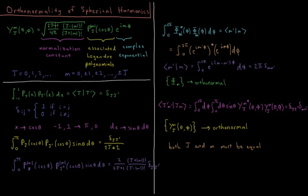The normalization constant is the square root of (2j plus 1) over 4pi, times (j minus absolute value of m) factorial over (j plus absolute value of m) factorial. This multiplies the associated Legendre polynomials depending on j and the absolute value of m of cosine theta, times e to the im phi.